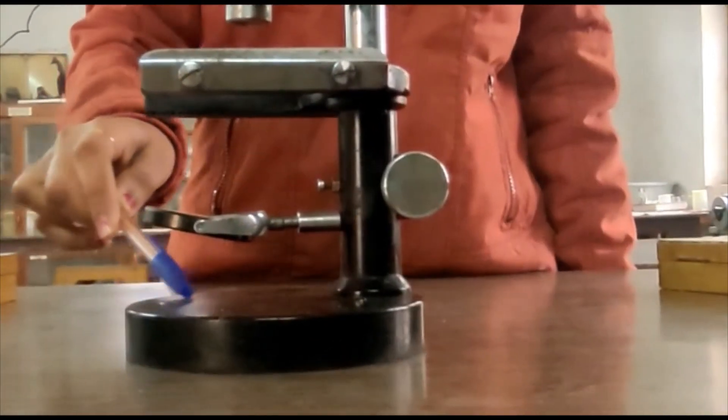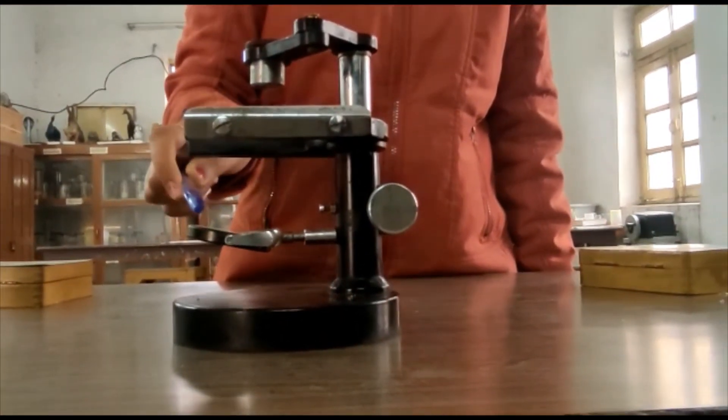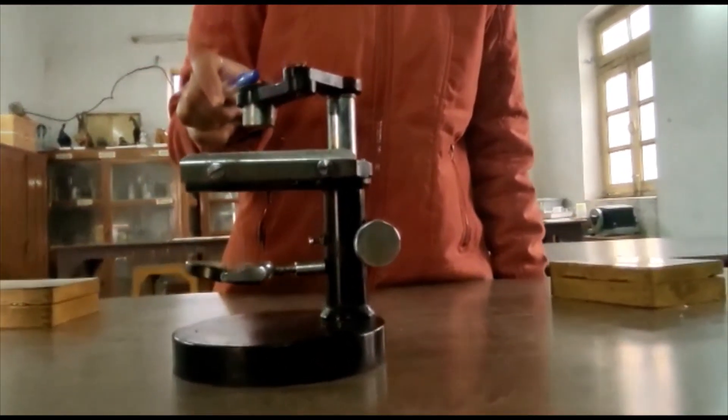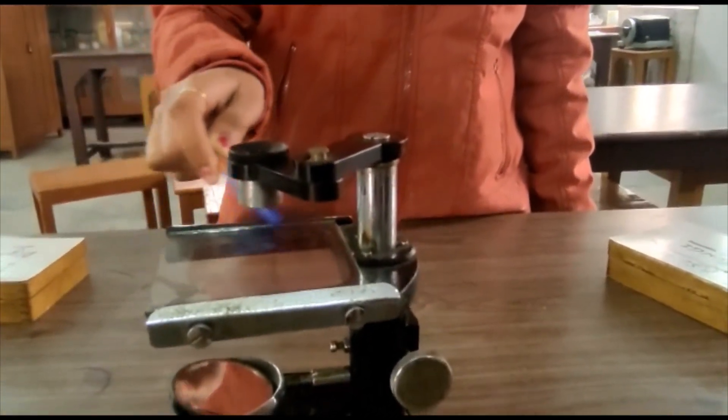Now next is the dissecting microscope. This is the basal part, here it is adjustment screw. This is the mirror, this is ocular lens and this is the stage. Here this is the slide.